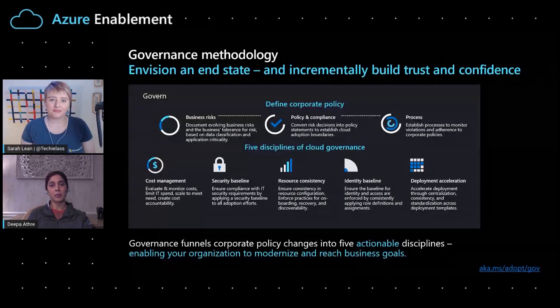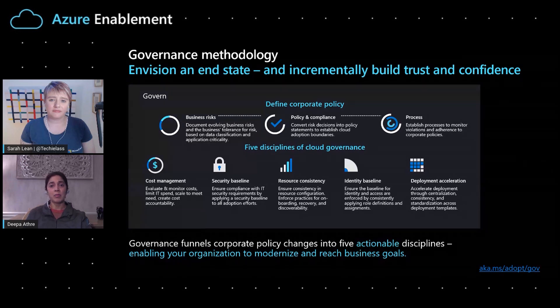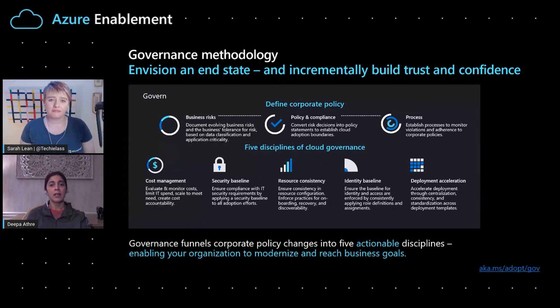Governance sounds like it's going to be a big topic. Do we split it up into different sections to make it more digestible? Governance is one topic, but we approach it in steps. When we approach the governance methodology, we start with understanding the risks to the business in moving to the cloud — based on data classification, the need for service availability, and application criticality. It is important to gauge the tolerance for risk as this will determine the scrutiny of the policies. Once risk factors have been determined, you would need to document policy statements which would mitigate the risks and draw boundaries for cloud adoption. Another important step in defining corporate policy is to have a clear statement on how to monitor, enforce and remediate against any violations of those policies.